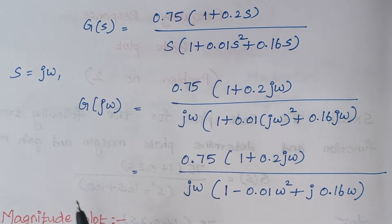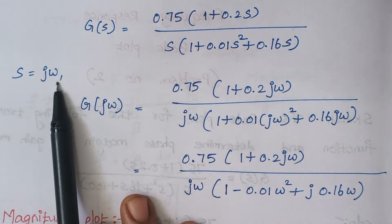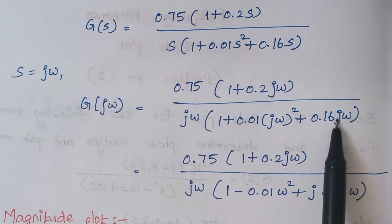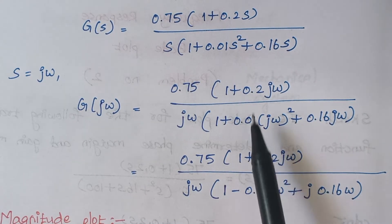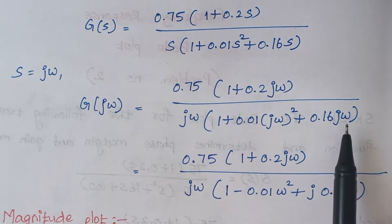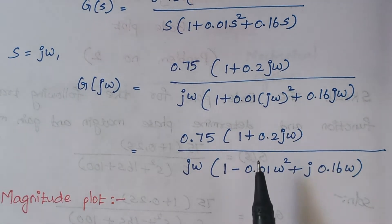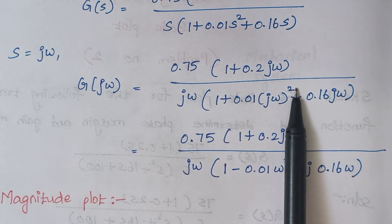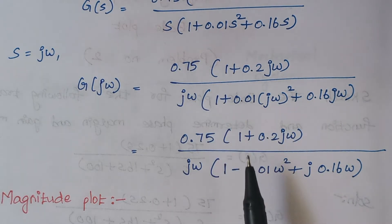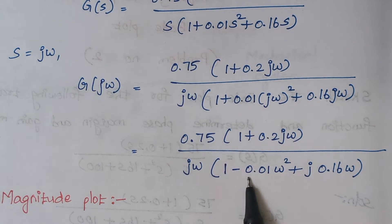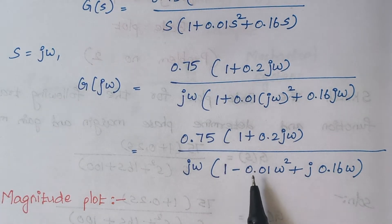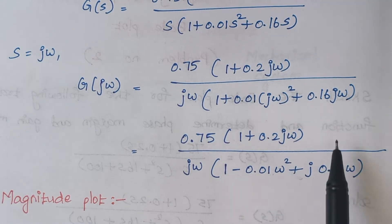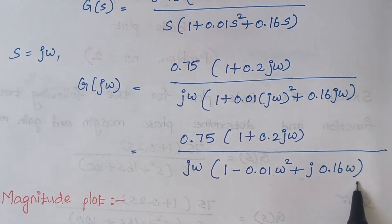The next step is to substitute s = jω. When you substitute s = jω, our equation gets modified. Since j² = −1, minus into plus gives minus. So the quadratic expression in the denominator gets modified as 1 − 0.01ω² + j0.16ω.